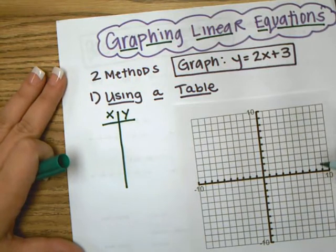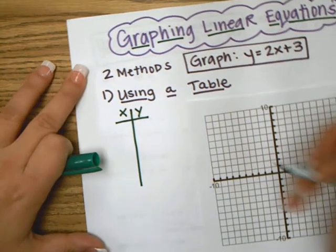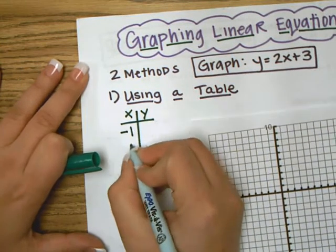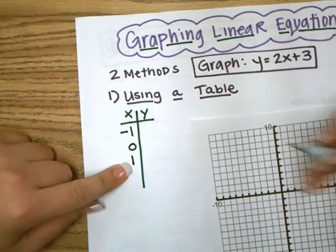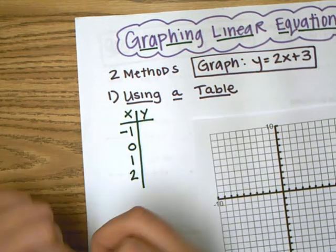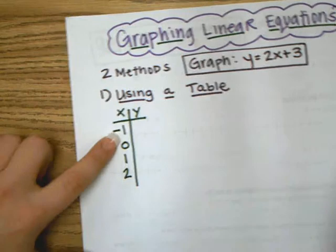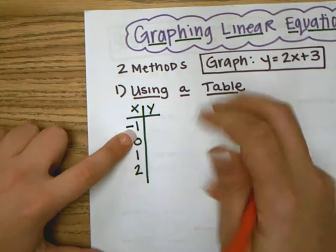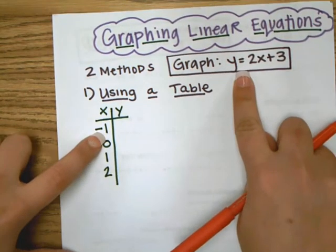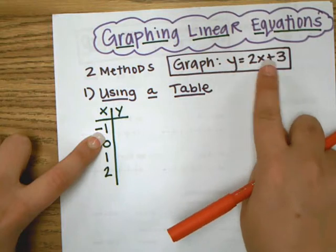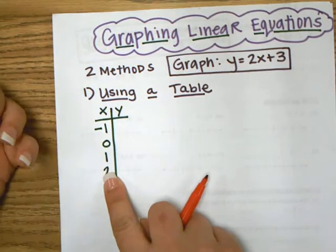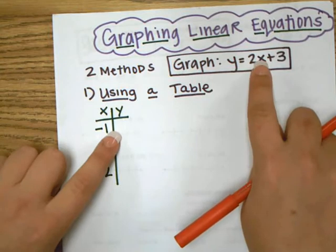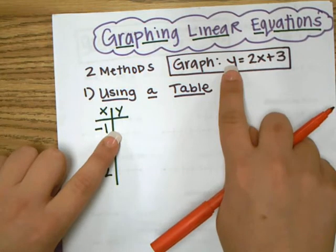Usually it's a good idea to pick at least one negative, zero, and a positive number. So at least three numbers — I'm going to go ahead and pick four. Then you're going to take these x values, and if we want to graph the linear equation y equals 2x plus 3, we're going to take these values that we selected and plug them in for x to obtain the y value.